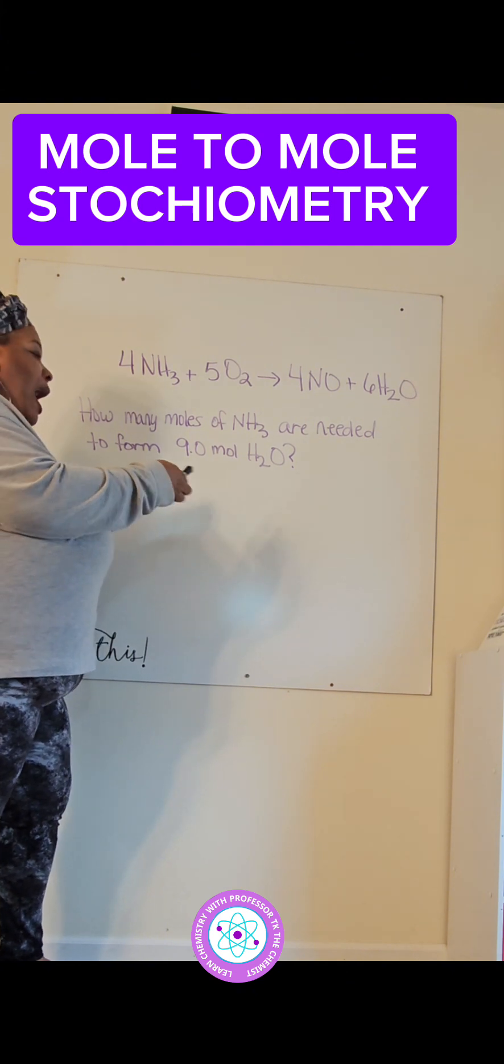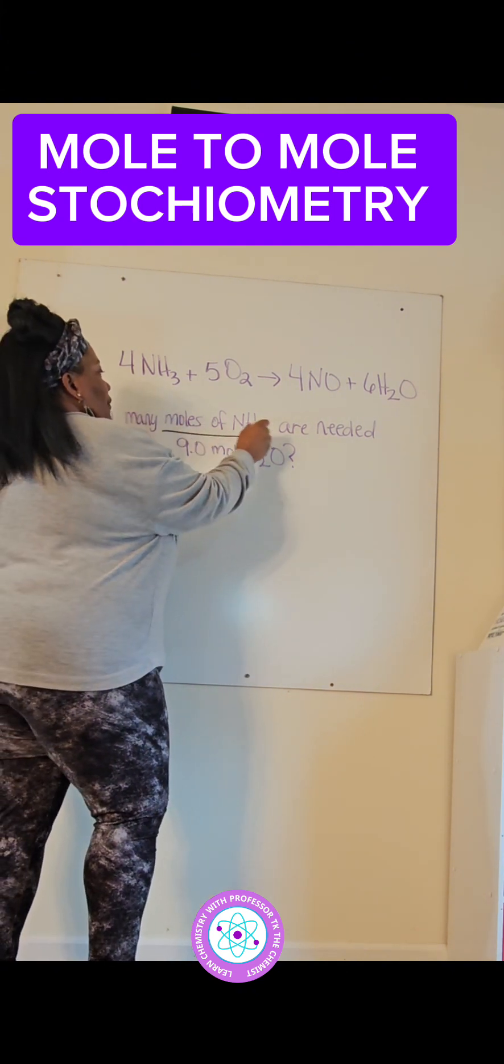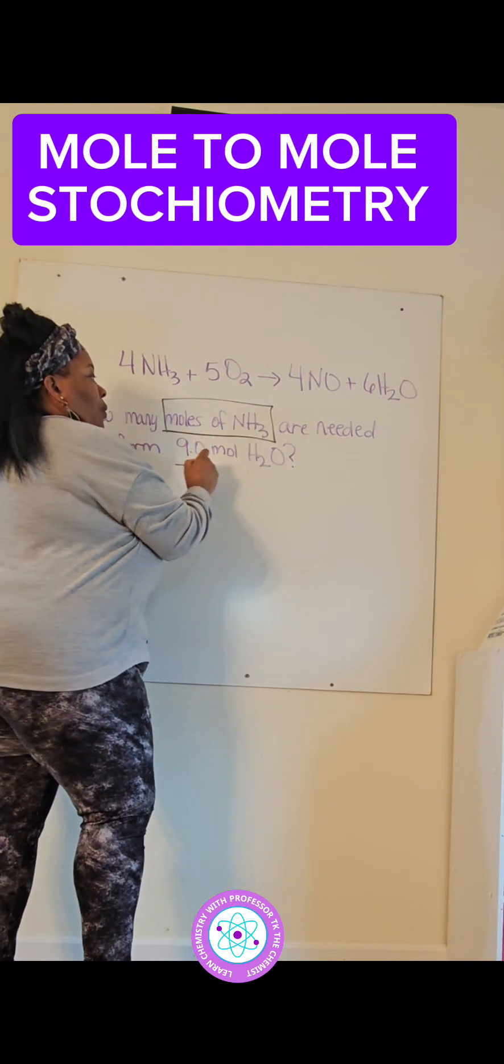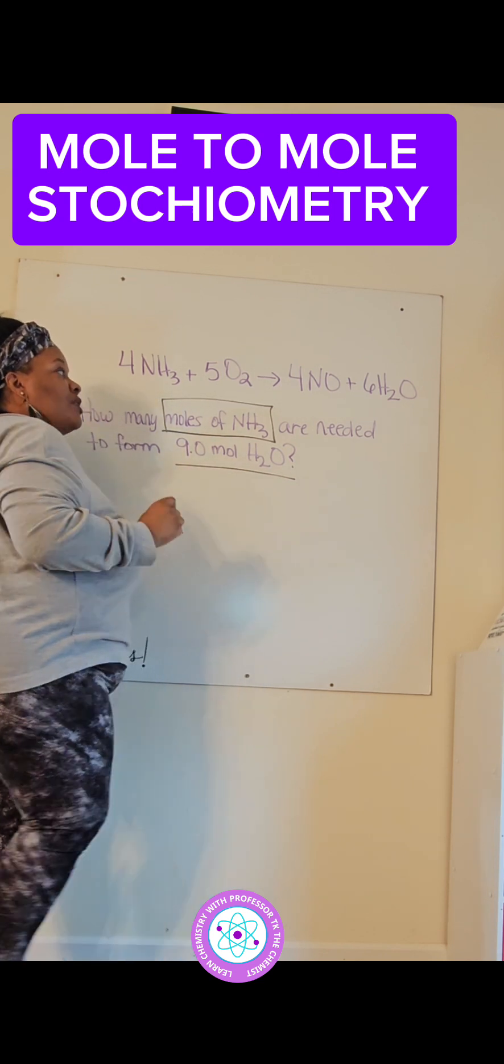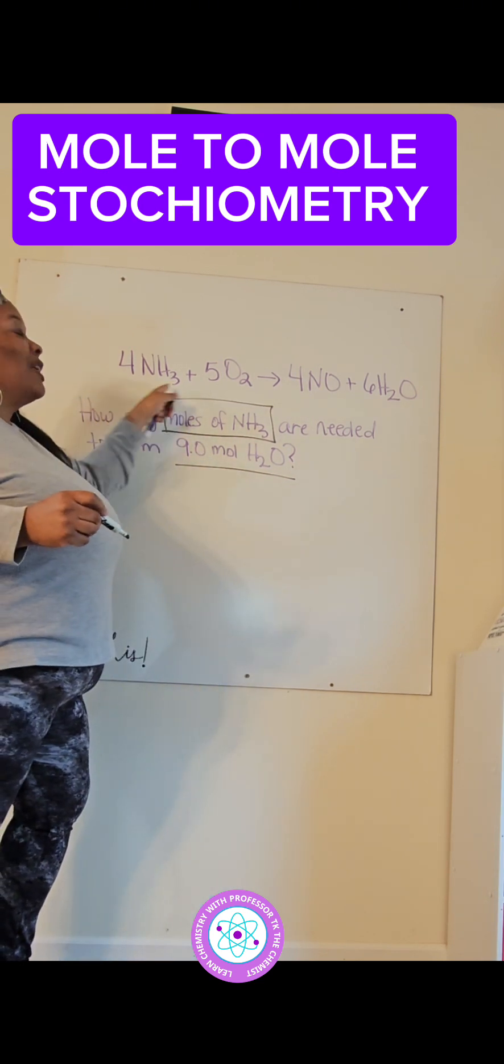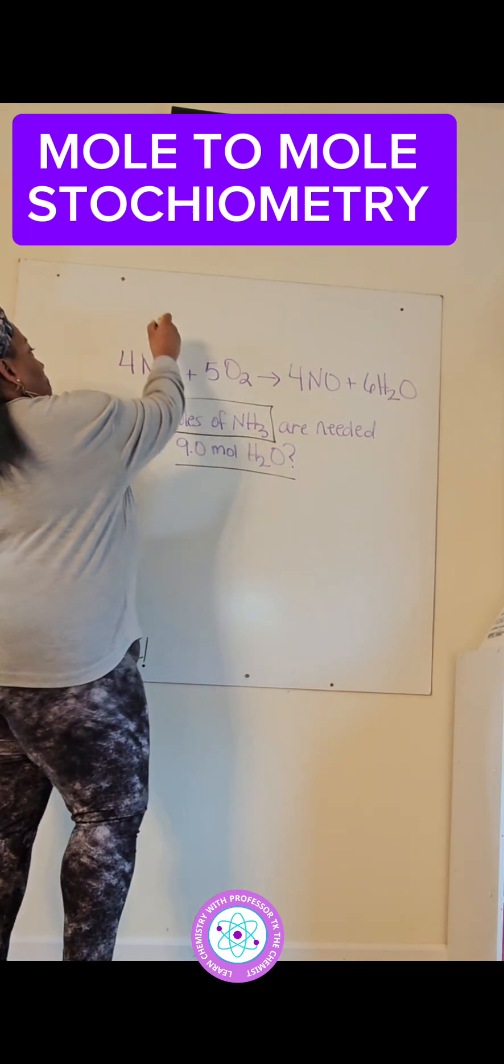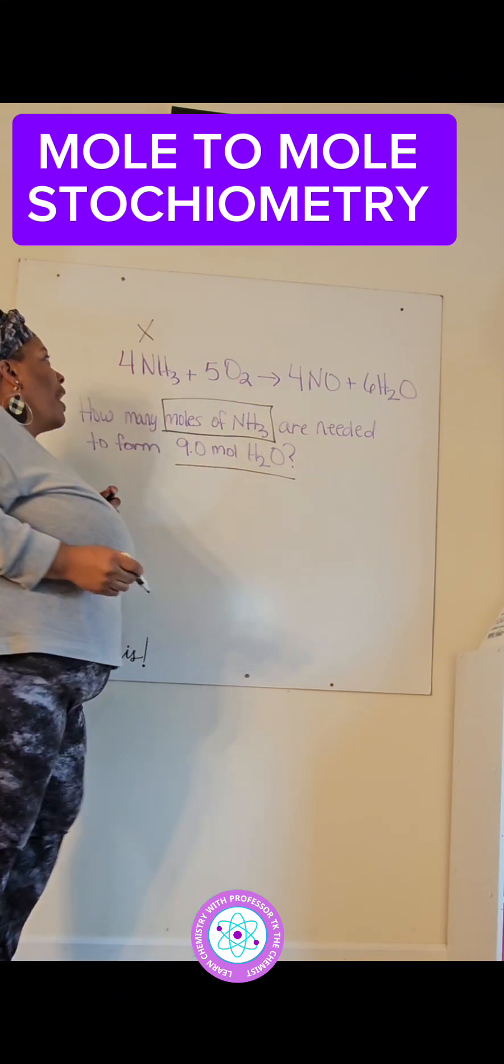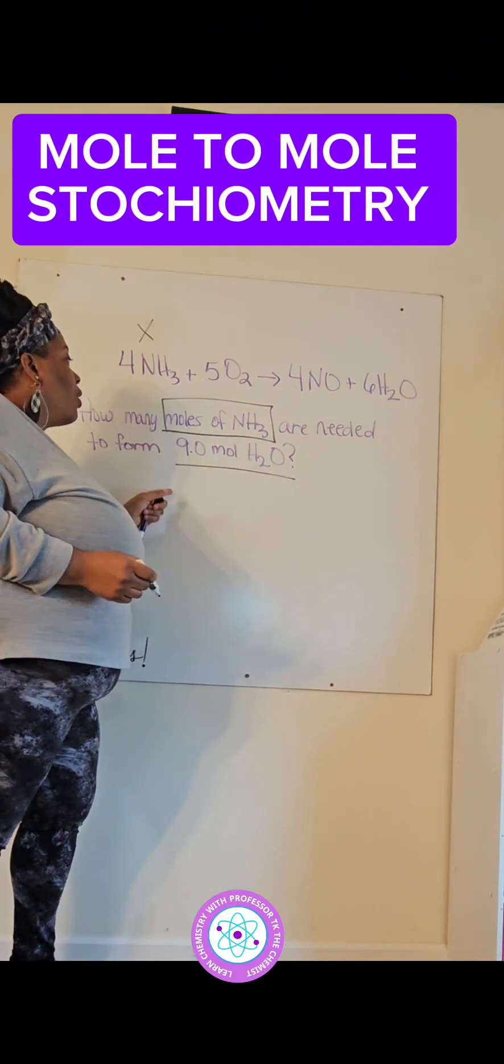What you're going to do, because we want to know how many moles of NH3 and we were given 9.0 moles, we need to first label our problem. So we're going to put an X above the 4NH3 because that's what we're looking for.